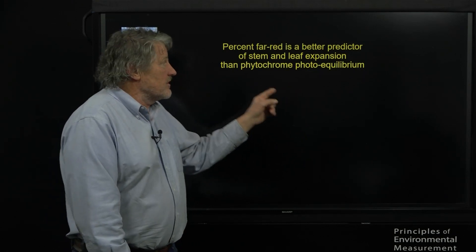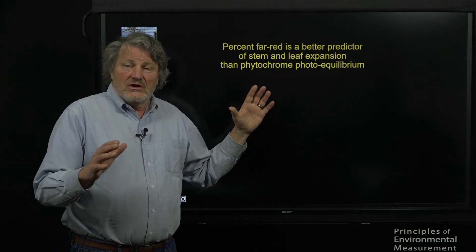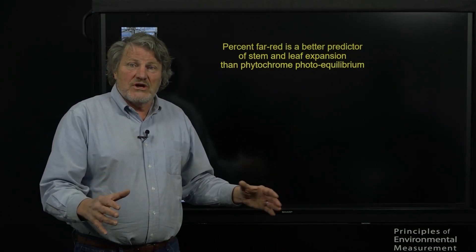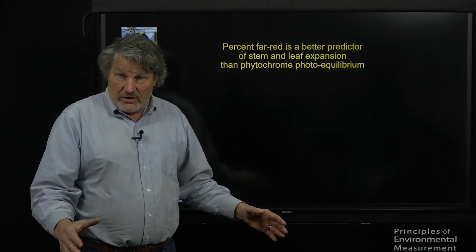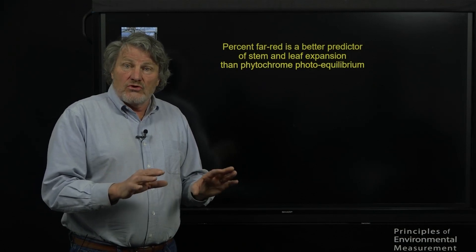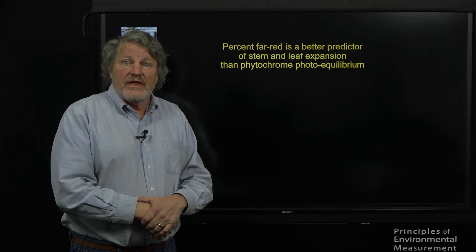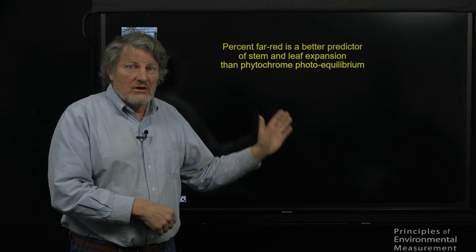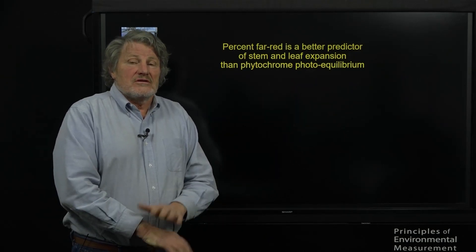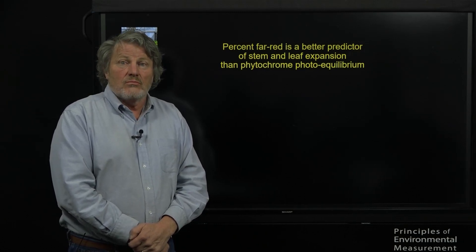So you can see from the title right here, we get two approaches to this, the percent far-red and a more complex measurement called phytochrome photoequilibrium, and I want to compare those two approaches to predicting stem length and leaf area in plants. One's the classic method, more complex instrumentation, one's a new method that is much simpler and has the potential to be more intuitive and more useful.